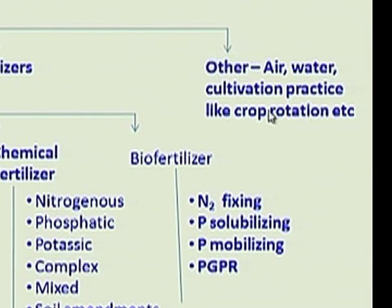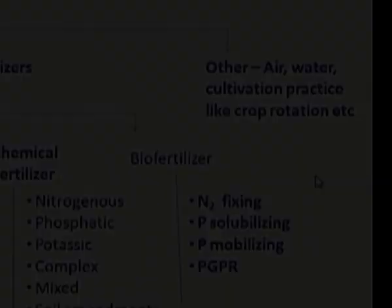Among bio-fertilizers, nitrogen fixing, phosphorus solubilizing, phosphorus mobilizing, and plant growth promoting rhizobacteria are important ones. Other sources of plant nutrients are air, water, and different cultivation practices like crop rotation, etc.